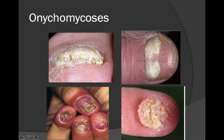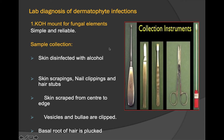For lab diagnosis of dermatophytic infection, the first step is a KOH mount for fungal elements — a simple and reliable method. Skin is disinfected with alcohol, then skin scrapings, nail clippings, and hair stubs are collected. Skin is scraped from center to periphery because there is clearing in the center. Vesicles and bullae are clipped, and the basal root of hair is plucked — never from the tip or middle.